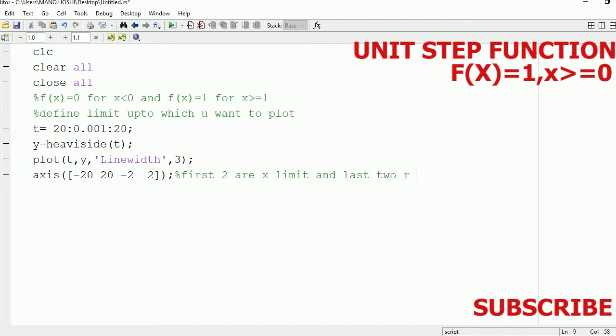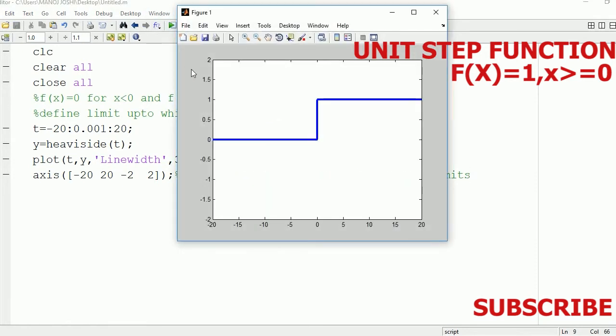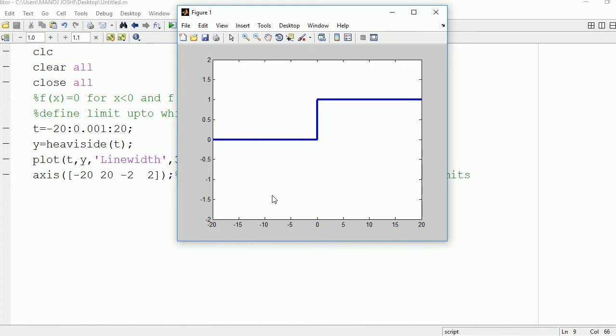Now we're going to run it. Here you can see the unit step signal - for x greater than or equal to 0 it is 1, and for less than 0 it is 0. Thanks for watching.